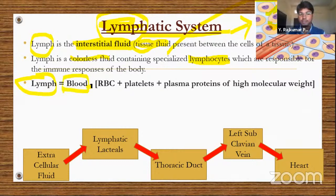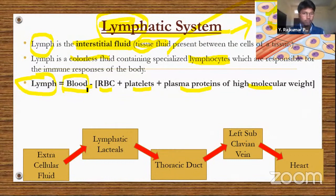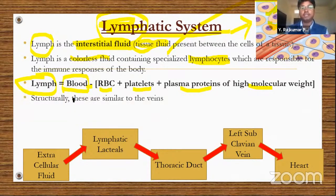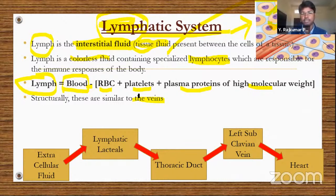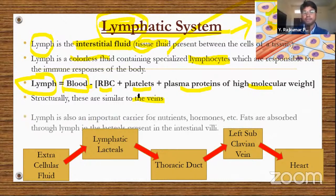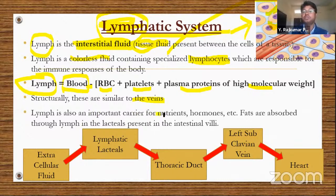Lymph can be understood by this formula: Lymph = Blood minus RBCs, platelets, and plasma proteins of high molecular weight. So if you remove RBCs, platelets, and high-molecular-weight plasma proteins from blood, the remaining fluid matrix is called lymph. Structurally, lymphatic vessels are similar to veins.